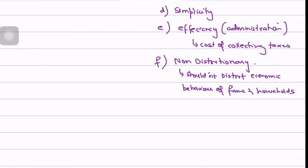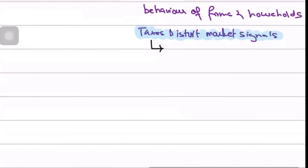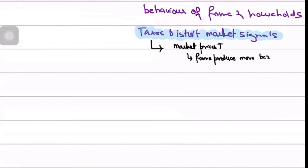There is one more point attached to being non-distortionary: taxes can distort market signals. Remember, we talked about how taxes distort market signals. For example, if market prices rise, firms produce more because they think demand is growing — market prices act as a signal and incentive for firms to produce more output.